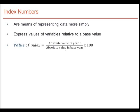Technically, the way we compute a price index is given in the third bullet. We take the base year value and put it into the denominator. If we are interested in an index number for a particular year T, we take the value of the variable in year T divided by the value of the variable in the base year and multiply the result by 100.